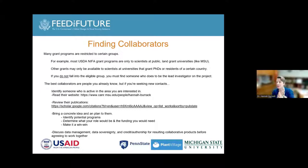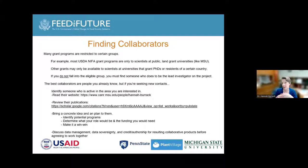Most grant programs have specific target groups they seek to support — whether a geographic area or a type of institution like a university or NGO. For example, most USDA research grants are restricted to scientists at public land-grant universities like MSU. Scientists not at these institutions wouldn't have access to these funds unless collaborating with someone at a supported institution.